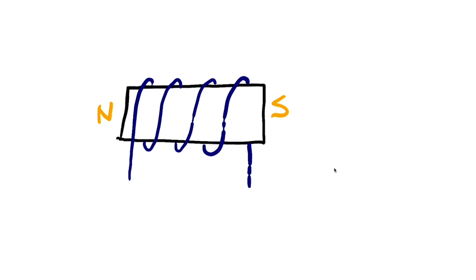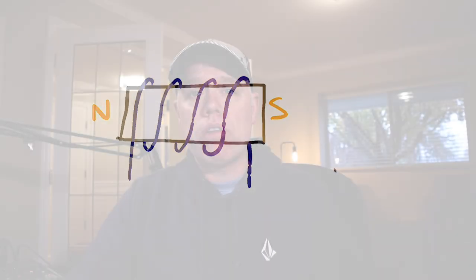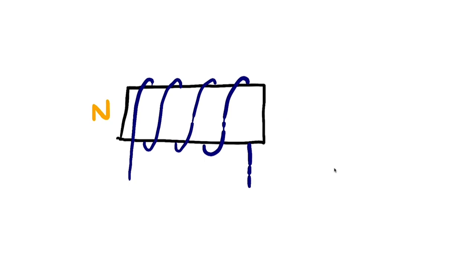Let's remove the polarities and instead assign north and south. If this end is north and this end is south, my thumb has to point to north. When I hold my hand that way, I'm looking at the palm of my hand, which means the current is going underneath. I look for the wrap going underneath — that is my negative point. So in this drawing, the point underneath is negative and the other end is positive.